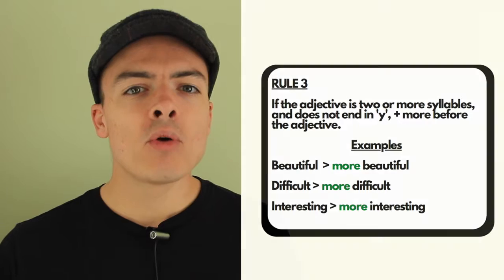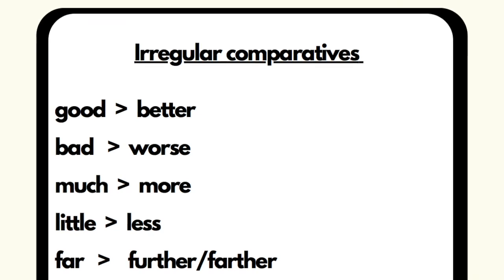So they're the three rules. We do have a couple of irregular comparative adjectives. I'm going to put those on the screen now.